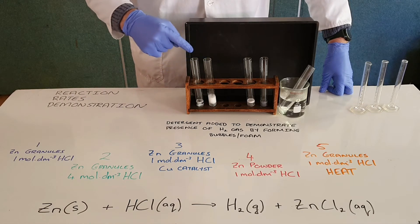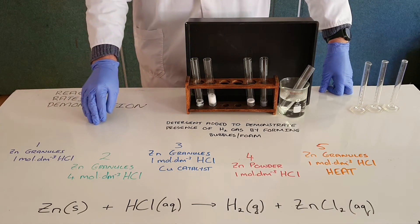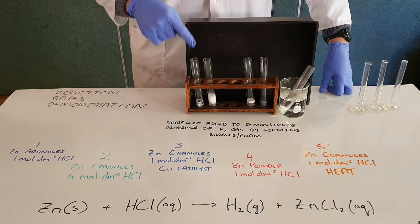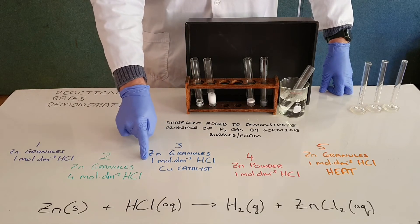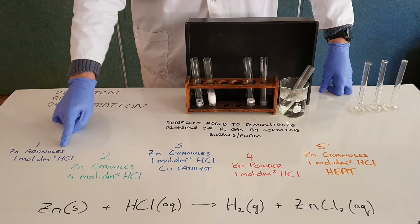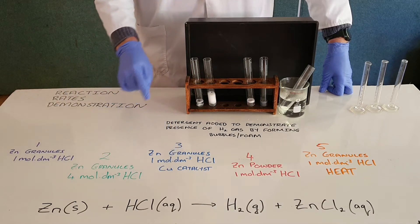And we can start to see that happening here with far more foam forming in the second test tube than in our first test tube. In our third test tube we have zinc granules and one molar hydrochloric acid, the one difference here being that we now have copper that acts as a catalyst.